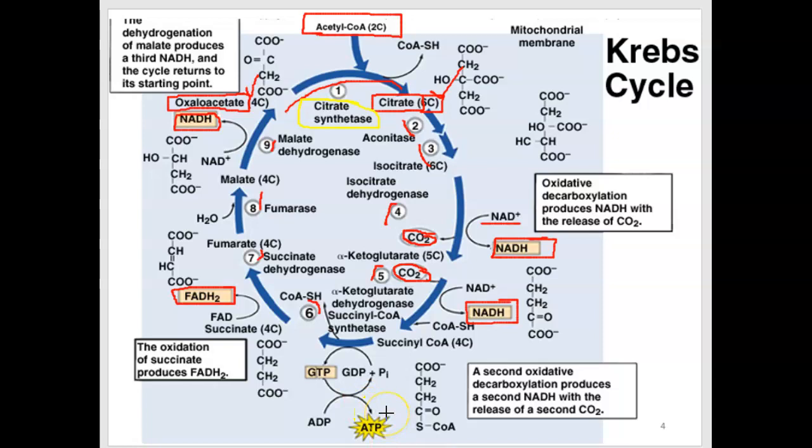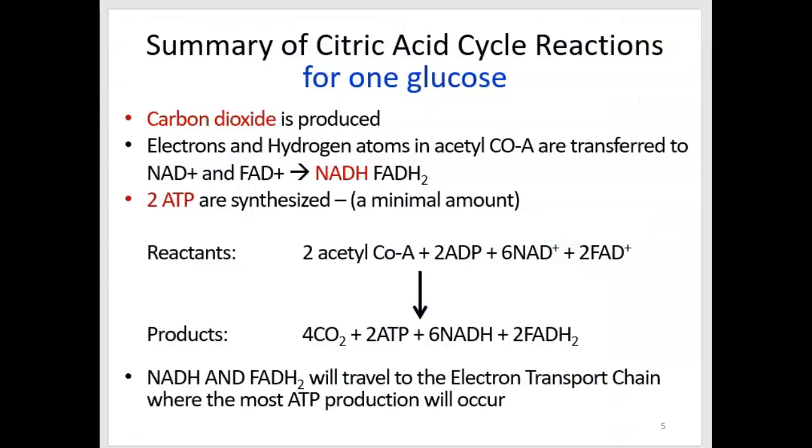And then finally, you should also know that one of the steps, one of the nine, produces ATP. So we do get a little bit of ATP from the Krebs cycle, but not a lot.